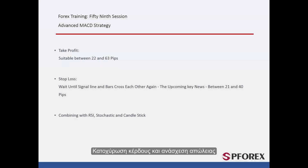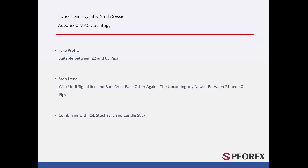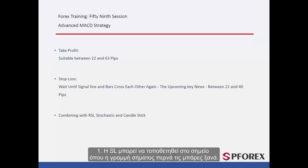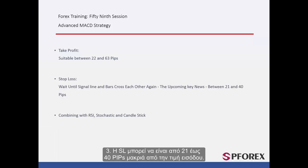Take Profit value is between 22 and 63 pips based on other confirmations and type of candle pattern on the entry price. Stop loss price can be determined with different methods: SL can be placed on the spot where the signal line passes the bars again; SL can be specified based on the analysis of future major calendared news; or SL can be 21 to 40 pips away from an entry price.